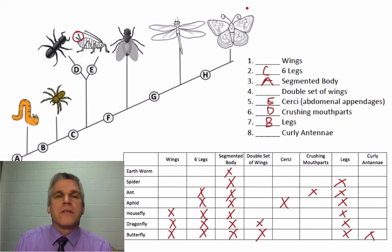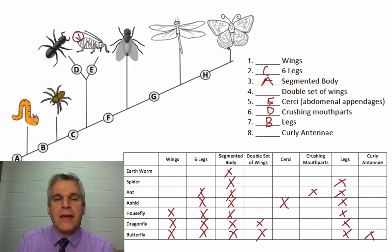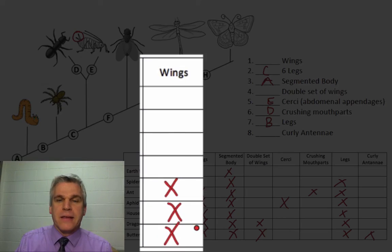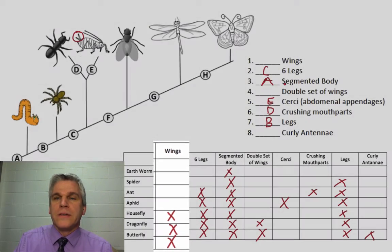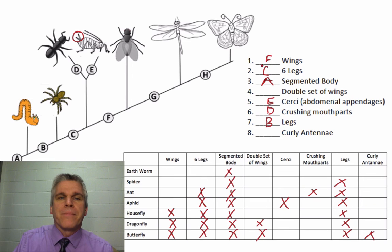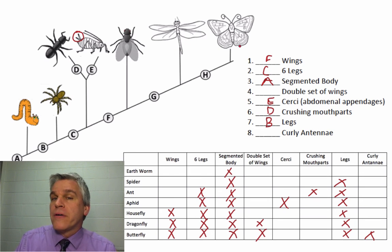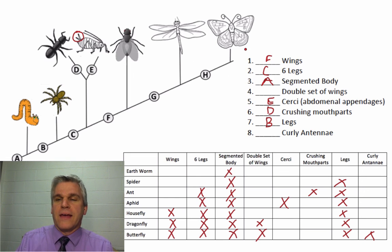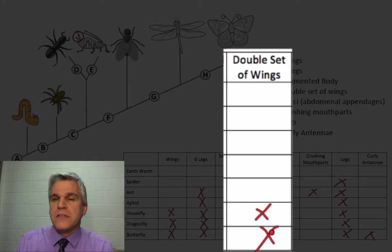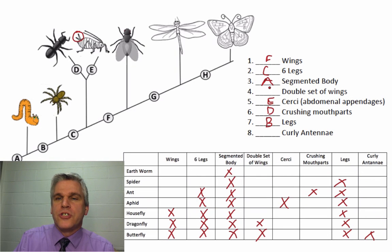Now, what do these last three all have in common — the housefly, the dragonfly, and the butterfly? That's that they all have wings. So wings would be F. What do the dragonfly and the butterfly have in common that the others don't? Looking on our table, a double set of wings. So that is G.